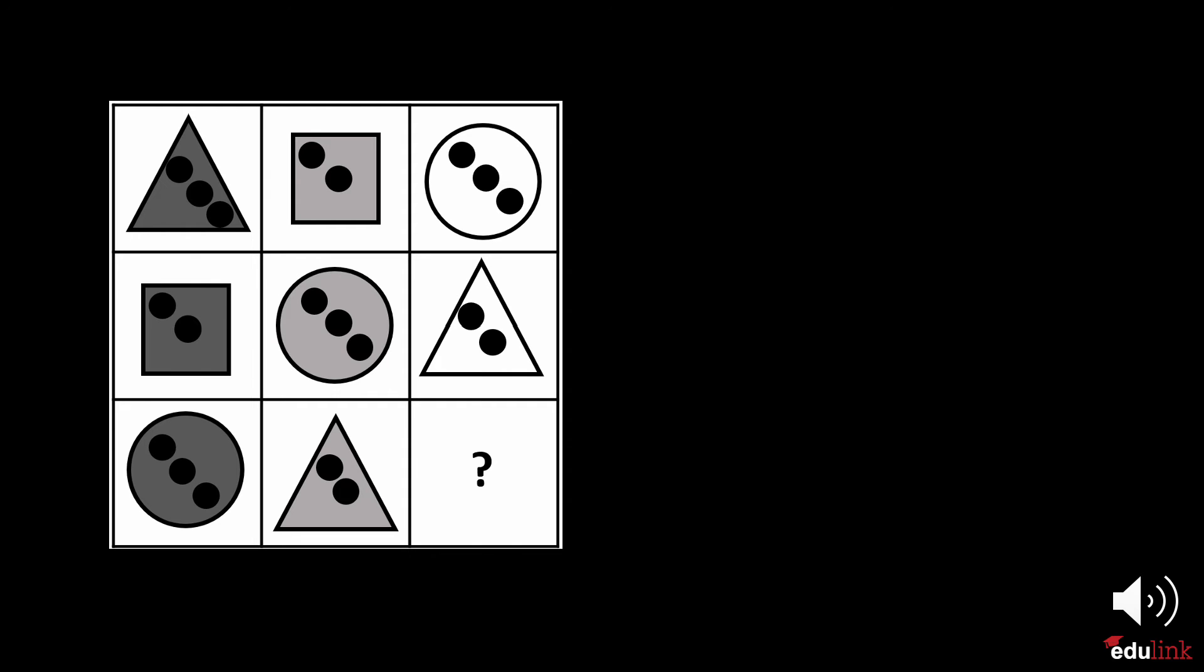Now let's add some shading. In this example, we have three variables: shape, amount, and shading. Can you determine what goes in the empty space?